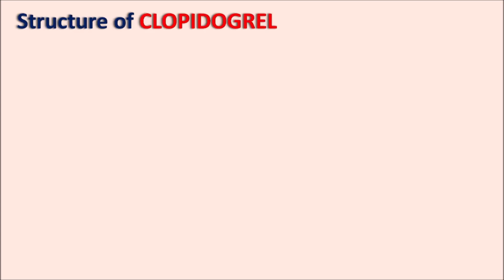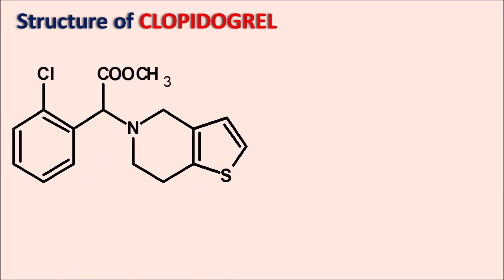Now let us see the structure of clopidogrel. This is the complete structure of clopidogrel, and we can observe the thienopyridine ring system. For the IUPAC name, preference is given to the functional group — here an ester is the functional group. The parent chain has two carbons and forms an ester, making it an acetate derivative with a methyl group — written as methyl acetate.